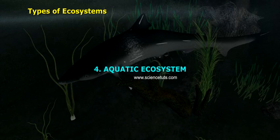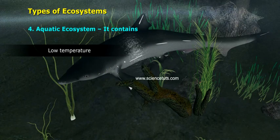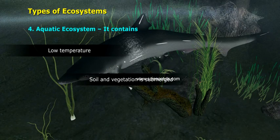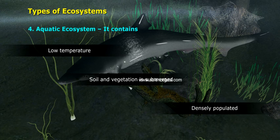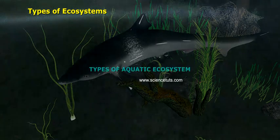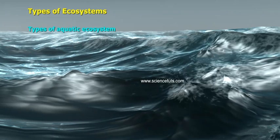Aquatic Ecosystem. It contains low temperature. Soil and vegetation is submerged. It is densely populated. Types of aquatic ecosystem include ocean, lotic, and lentic.